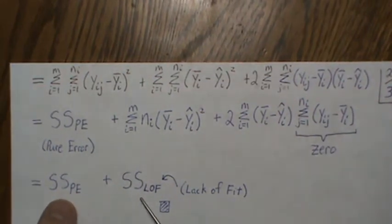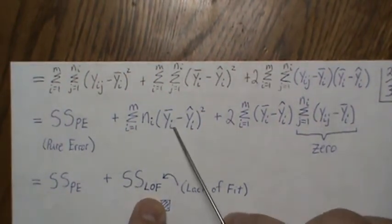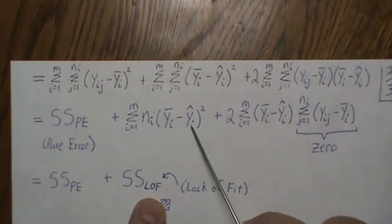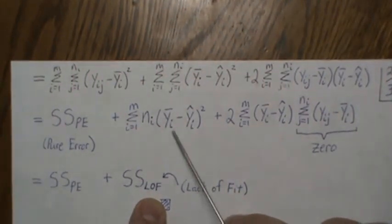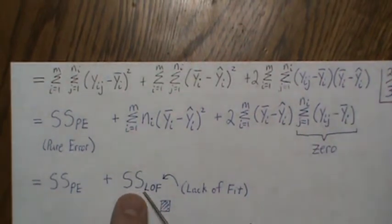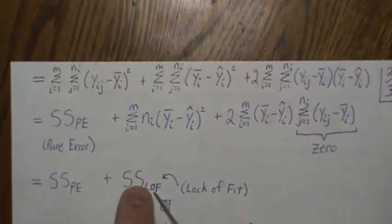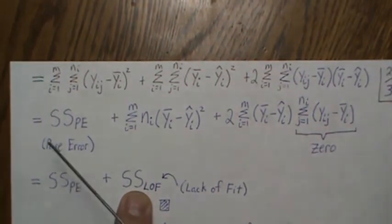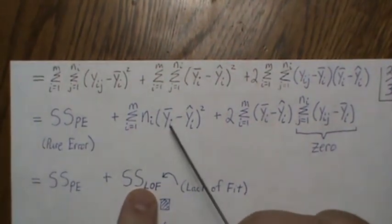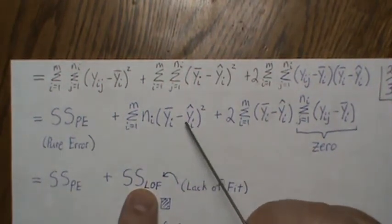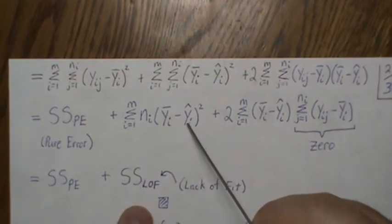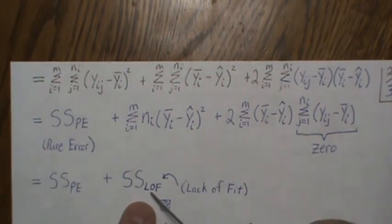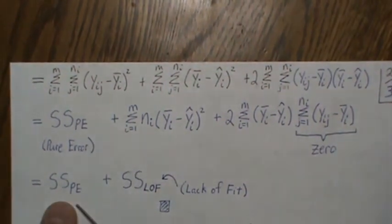So we partition the residual sum of squares into SSPE (pure error) and SSLOF (lack of fit). When y_{i·bar} equals y_hat_i for all i, the lack of fit sum of squares is close to zero and pure error dominates. But if the mean is not close to the fitted value, the lack of fit sum is large, indicating our model is not correct.